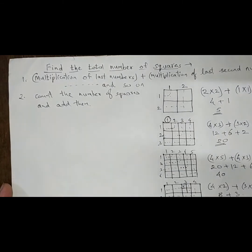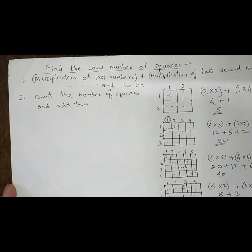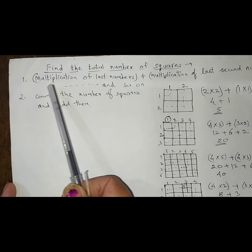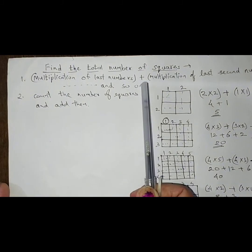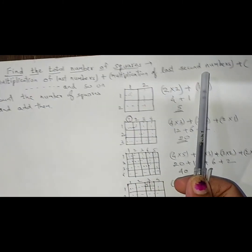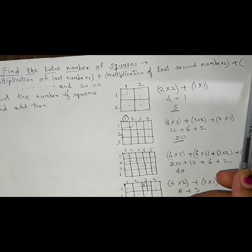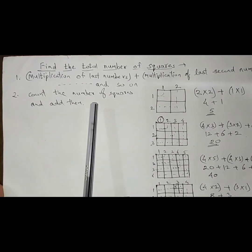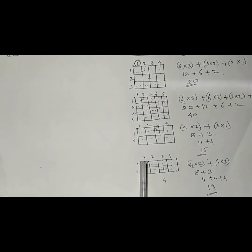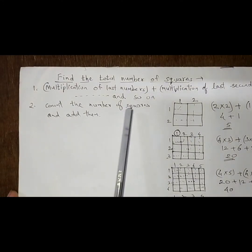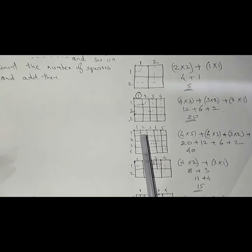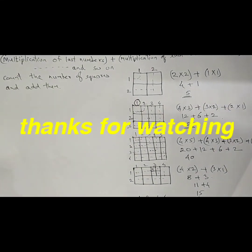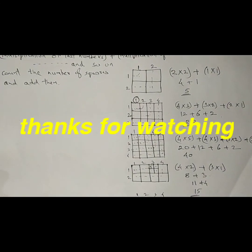So here we have just seen the simple steps to find the total number of squares. First we have done the multiplication of the last numbers. Add them into the multiplication of the last second numbers and so on. That is the last third, last fourth, last fifth and so on. If again there are sub squares in this way, then you have to just count the number of squares and add them. Then you can get the final answer in a very simple way. So if you follow this step, you can calculate in very less time.